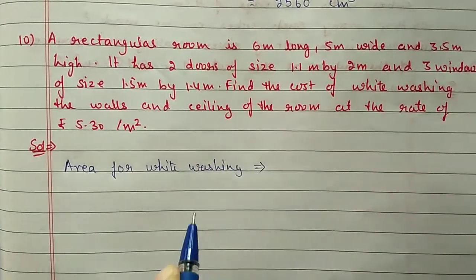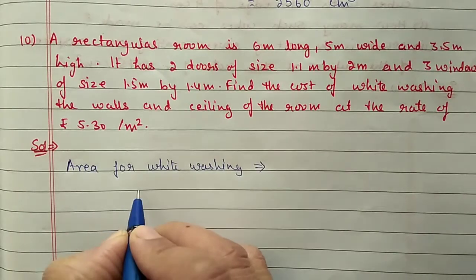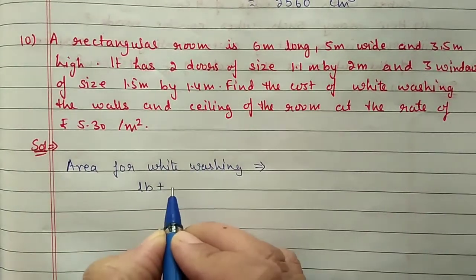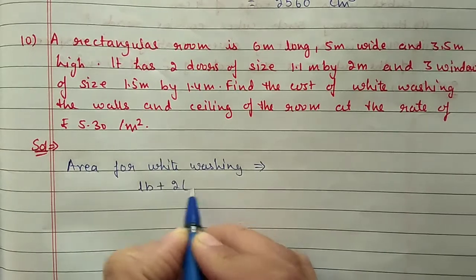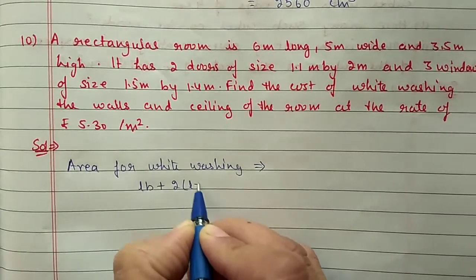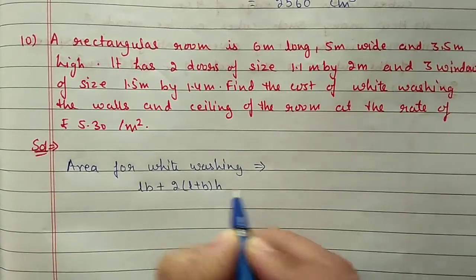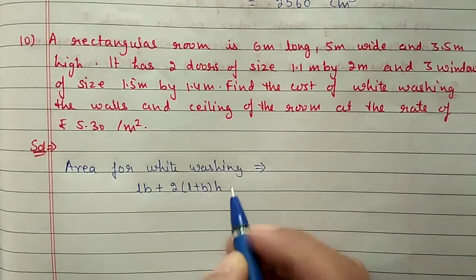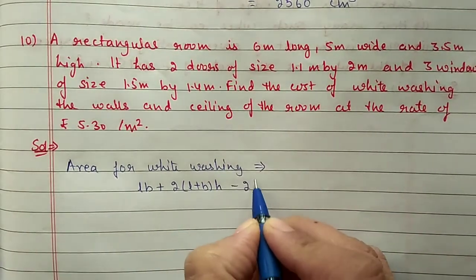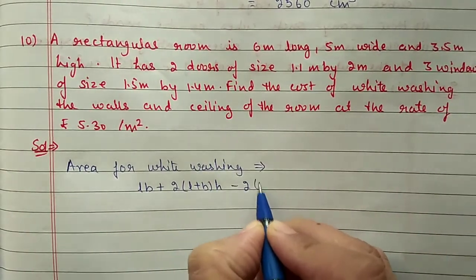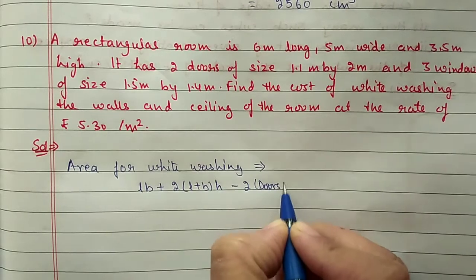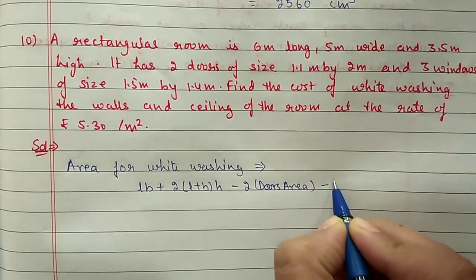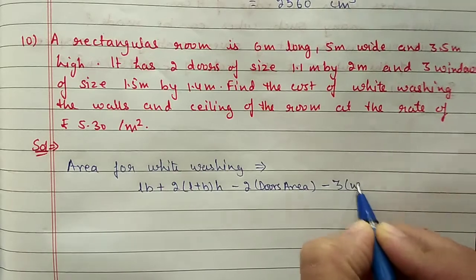We have to whitewash the ceiling — ceiling area will be length into breadth — and the 4 walls, whose area will be 2(L + B) into height. From this we have to subtract 2 door areas and 3 window areas.